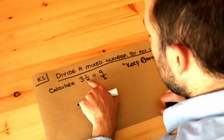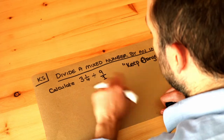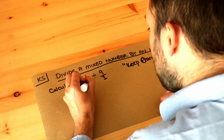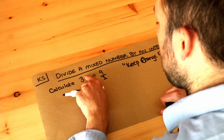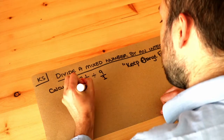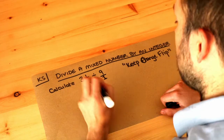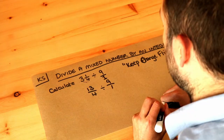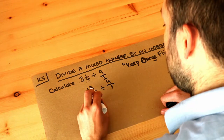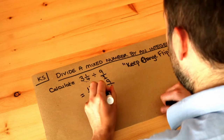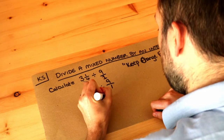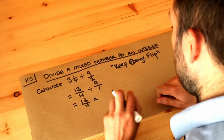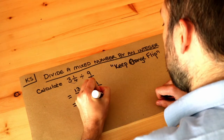Remember, we need to convert the mixed number into an improper fraction first. To do that, we do 3 times 4, which is 12, plus 1 is 13 — so this is 13 over 4. We saw how to do that in a previous video. Then we apply keep, change, flip: we keep 13/4 as it is, change the divide into a times, and flip 9 over 1, which becomes 1 over 9.